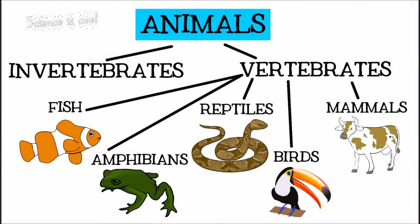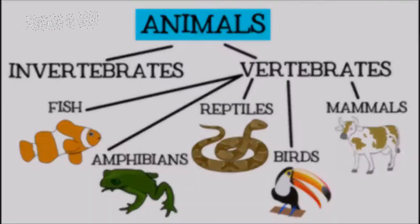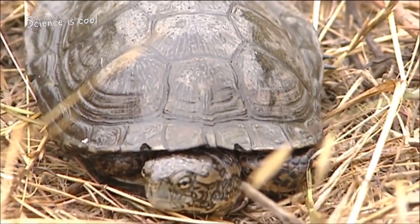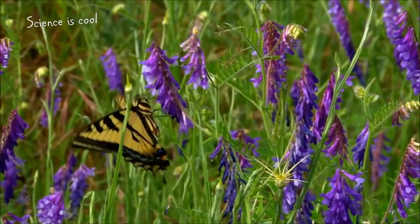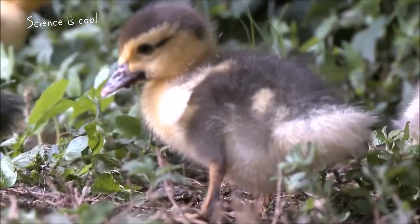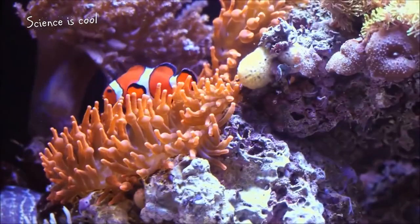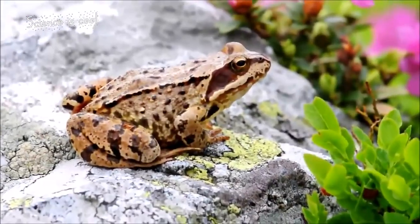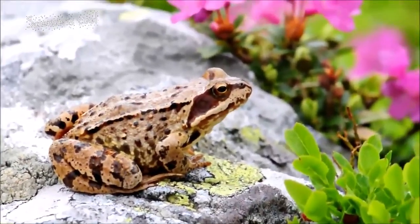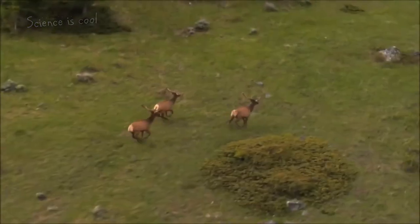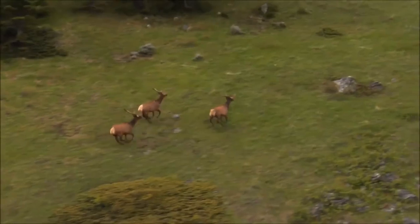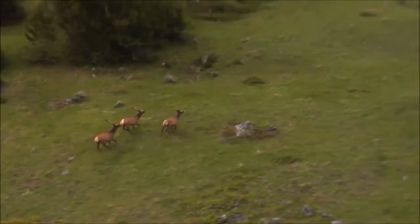A fun fact about mammals is that they are the only animals to have ears that stick out. The animal kingdom is classified into many different groups based on animal characteristics to help us understand the world around us. Saying an animal is an invertebrate, a vertebrate, a fish, amphibian, reptile, bird, or mammal tells us many things about it that can help us understand its needs and behavior.